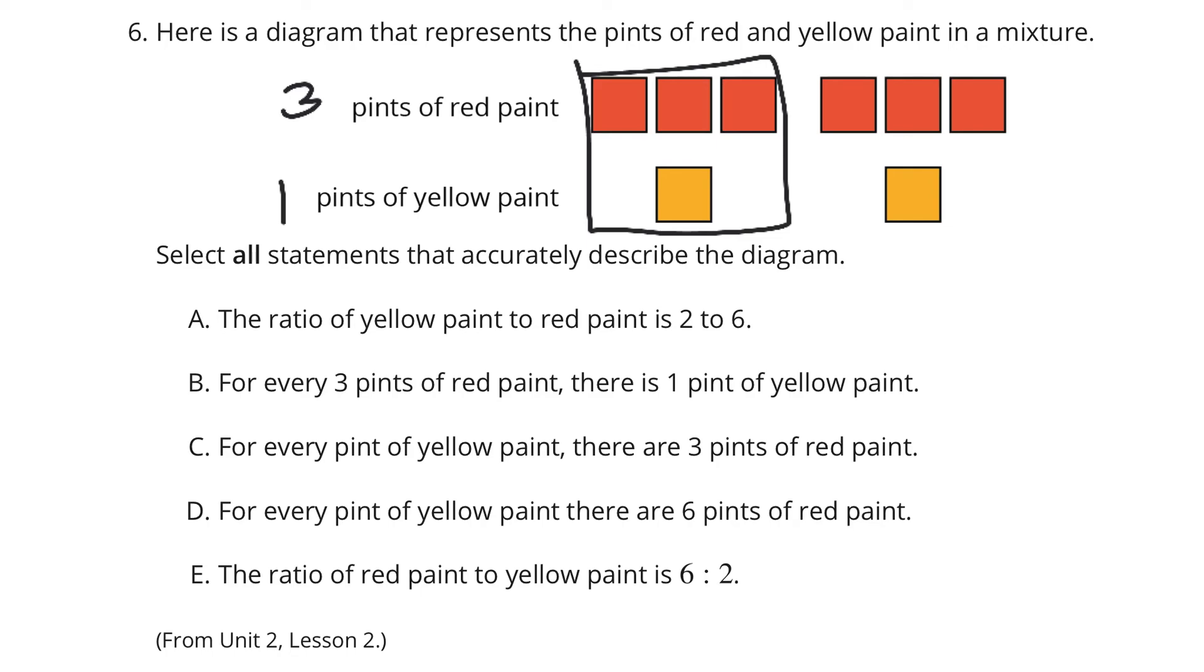So the ratio of yellow paint to red paint is two to six. Is that true? I have two yellow to six red. That is true. B. For every three red, there's one yellow. Three red, one yellow. That also appears to be true. For every pint of yellow, there are three pints of red. For every pint of yellow, there are three pints of red. Yes, that's true.